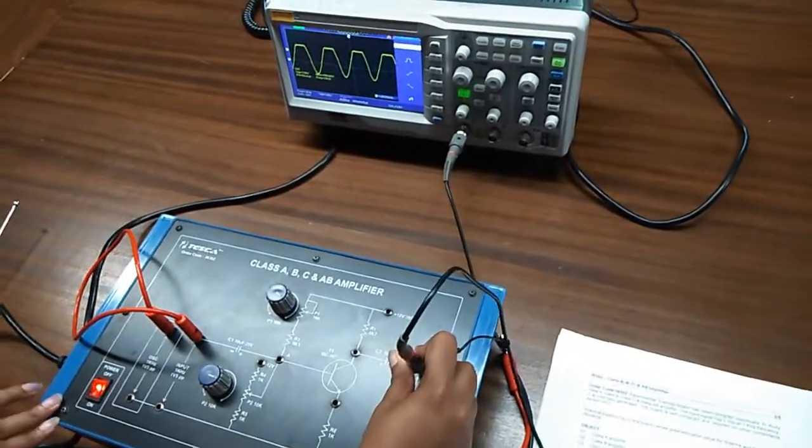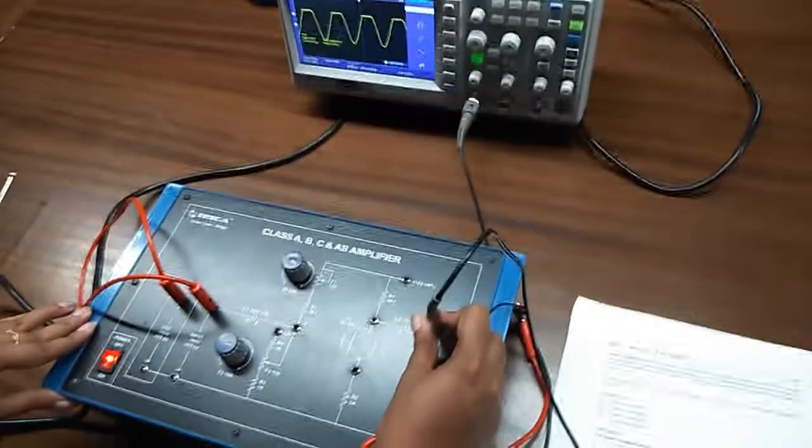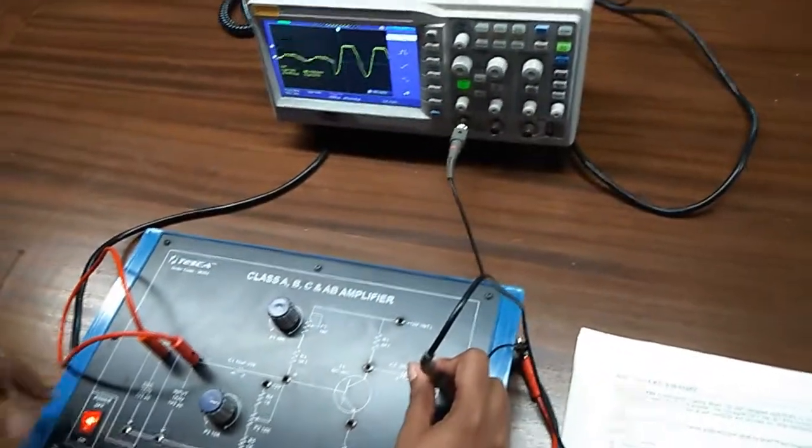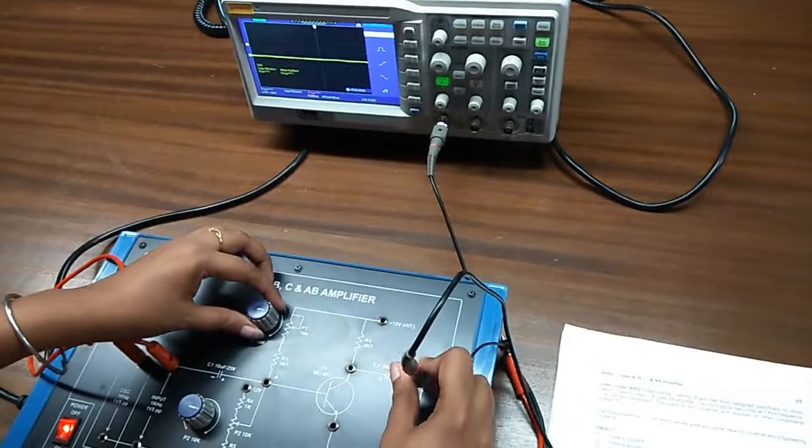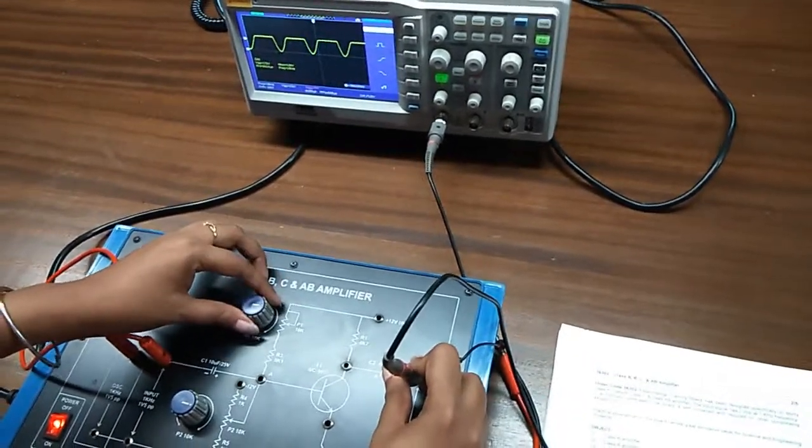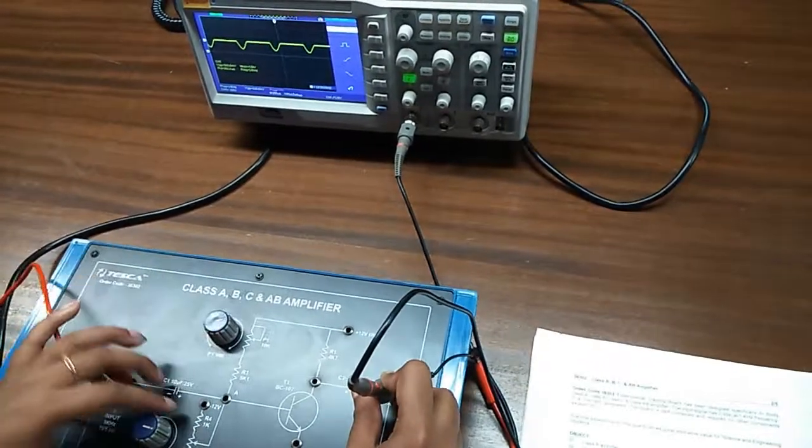We will get the output waveform for class AB amplifier, class B amplifier, and class C amplifier.